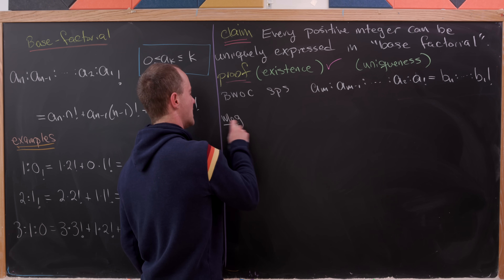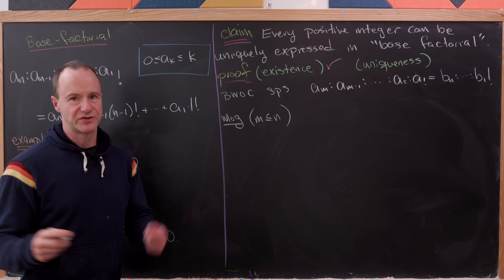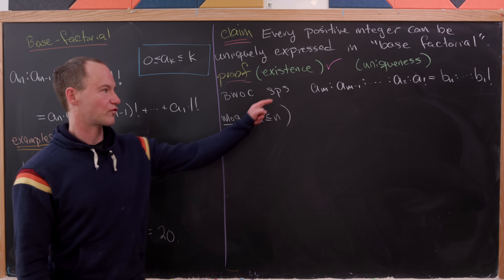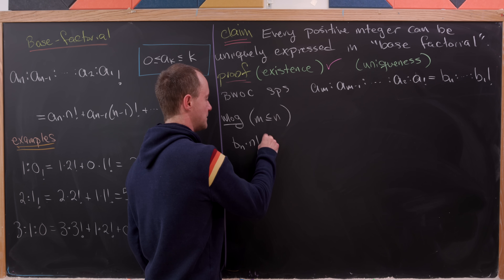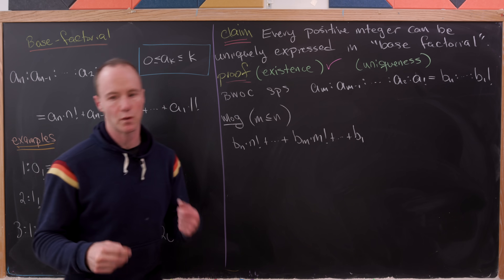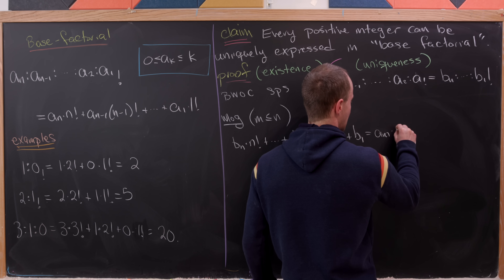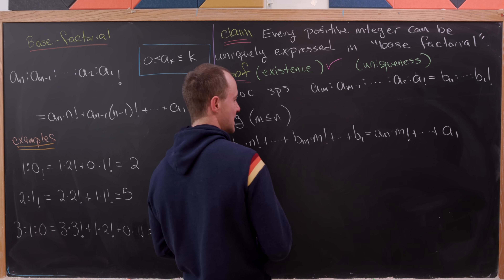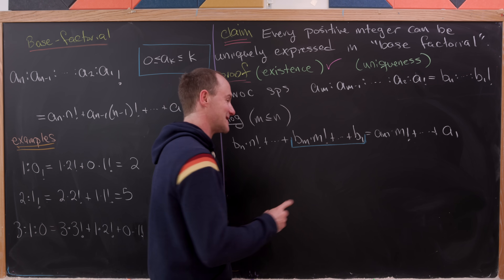We might as well assume that m ≤ n — that's just because one of them has to be less than or equal to the other. Writing those out in terms of their definition: b_n times n! plus all the way down to b_m times m! plus all the way down to b_1 equals a_m times m! plus all the way down to a_1. I've done that because the underlined portion on the left has the same ending point, m!, as the entire right-hand side.